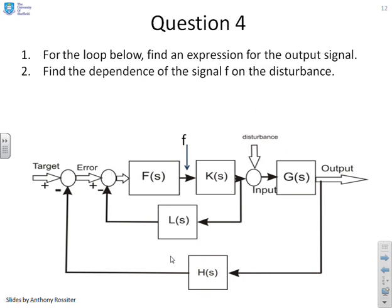Question 4. So for the loop below, find an expression for the output signal. So the output is given over here. And find the dependence of the signal F. F is marked here on the disturbance. The disturbance is marked here. So first of all, you'll see that this is a two input loop. So it's got some connections with the previous tutorial. And also it's got this nested loop structure. And we might be interested in F. So we'll start by doing part one, which is let's find the output. How does the output depend upon the target and the disturbance?